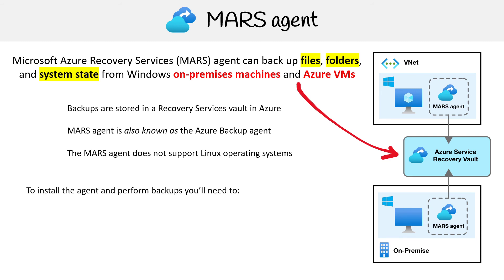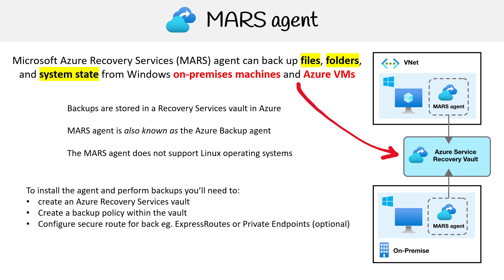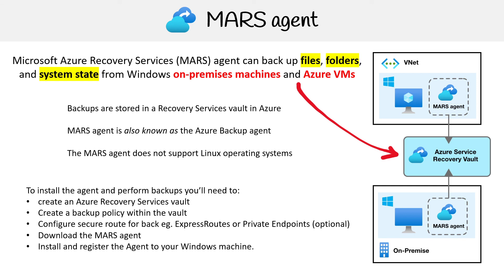To install the agent: you'll create a vault, since it has to back up to a vault; you need to create a backup policy, which we'll look at in the next slide; you'll probably have to configure a secure route — if you're connecting to your on-premise environment, you'd use ExpressRoute; and if you want to make sure the backup stays within Azure networks, you might need to create a private endpoint. These are totally optional or required depending on your use case. Finally, you'll download the MARS agent and install and register it to your Windows machine.